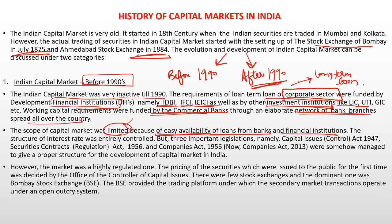The scope was limited and the structure of interest rates was entirely controlled. However, three important legislations — namely the Capital Issue Control Act 1947, the Securities Contracts (Regulation) Act 1956, and the Companies Act 1956 (later amended to Companies Act 2013) — were created. These three acts somehow managed to give a proper structure for the development of the capital market in India, though the market remained highly regulated.